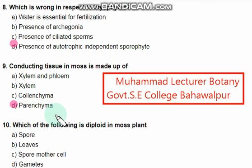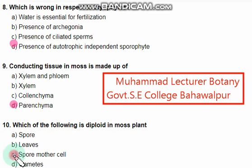Which of the following is diploid in a moss plant? Among the given options, option C — spore mother cells — are diploid. This is the correct answer.